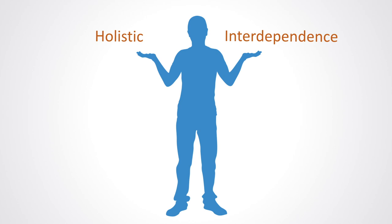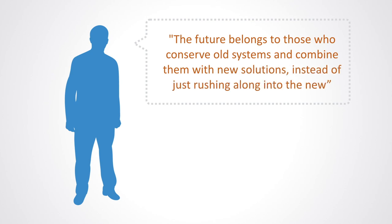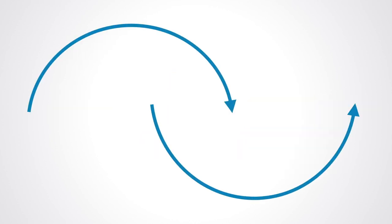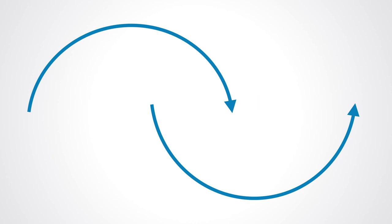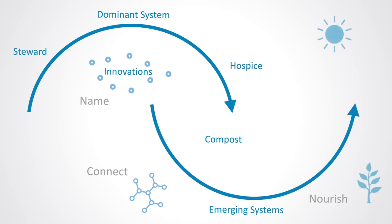Aspects of the old have to be continued but recreated. As Charles Ledbetter puts it, the future belongs to those who conserve old systems and combine them with new solutions, instead of just rushing along into the new. The collapse of a system is rarely a good thing, as it leads to outright chaos and destruction of the system's core pattern. What we want is to use disorder to disrupt those inert patterns that need to be changed, while building something new that will support the continuation of those aspects that need to be continued. The two-loop model gives us some way to recognize and connect the past to the future, and also gives us the possibility to come to some consensus about where we might be as a group, or even a whole society, in this process of change, and thus the best actions to take.